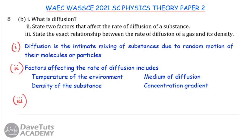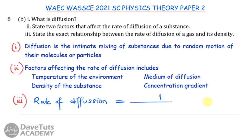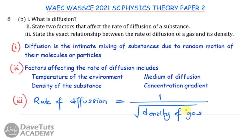The exact relationship between the rate of diffusion of a gas and its density is that the rate of diffusion is proportional to 1 over the square root of the density of the gas. This is the inverse relationship, and stating it correctly will earn full marks.